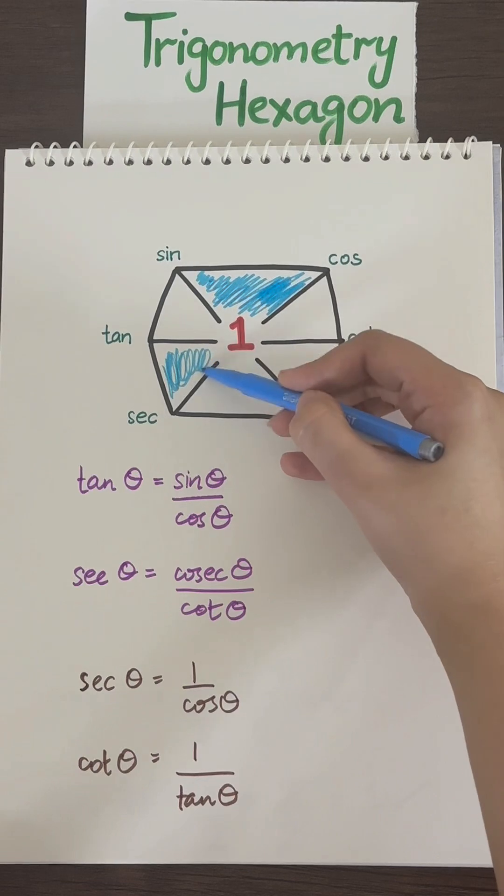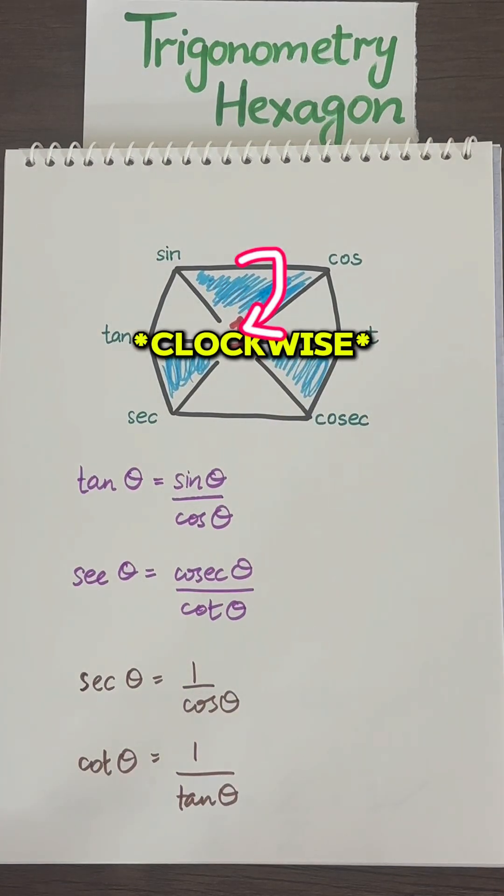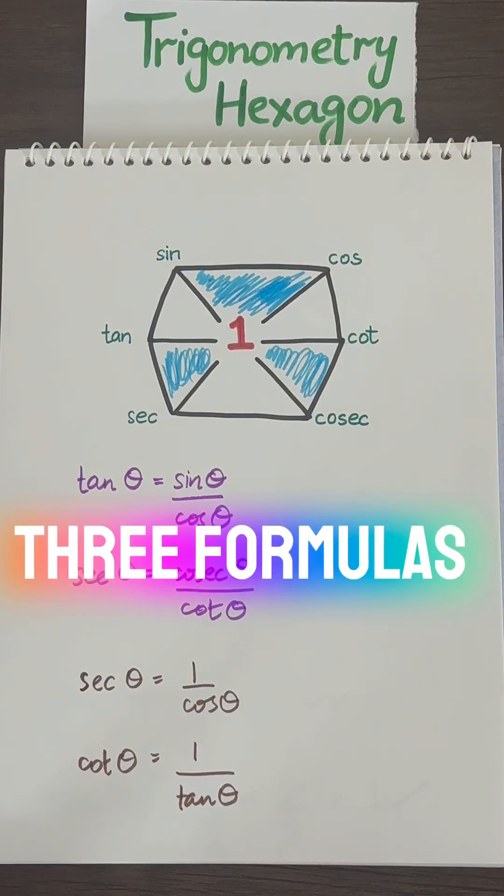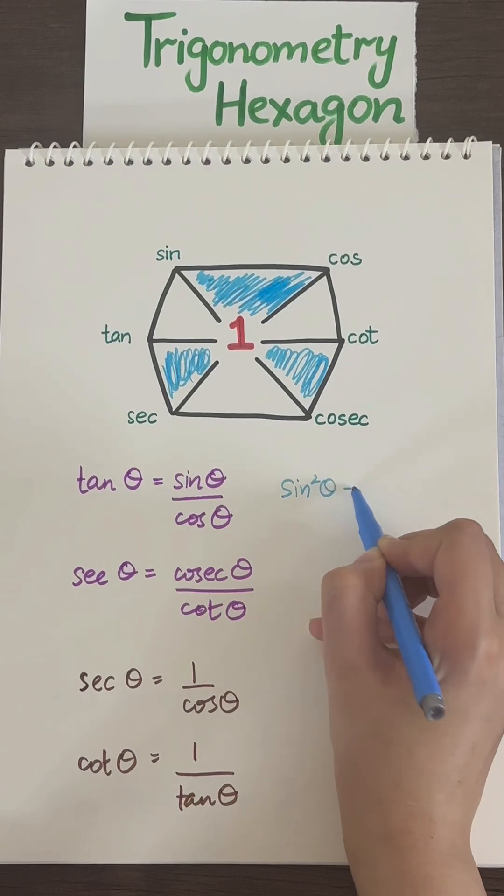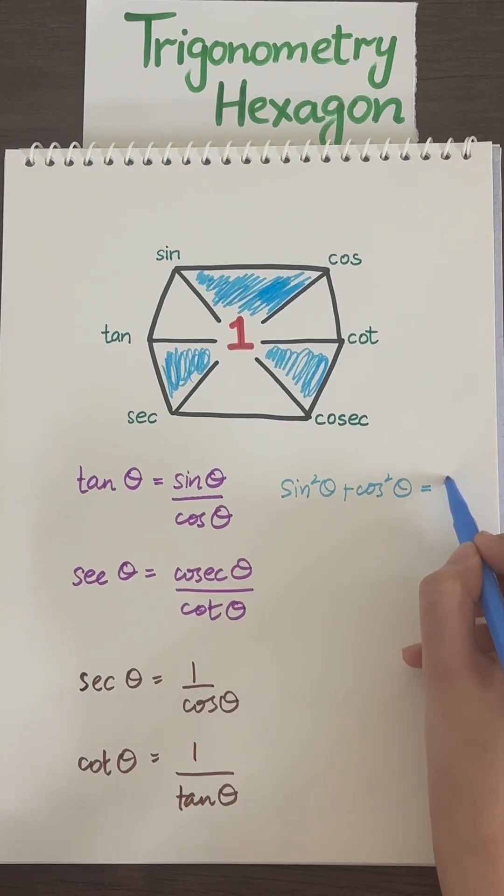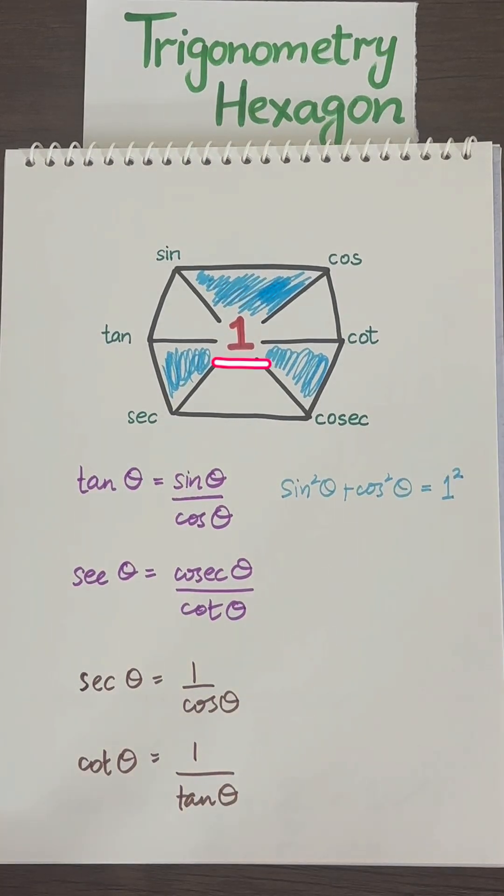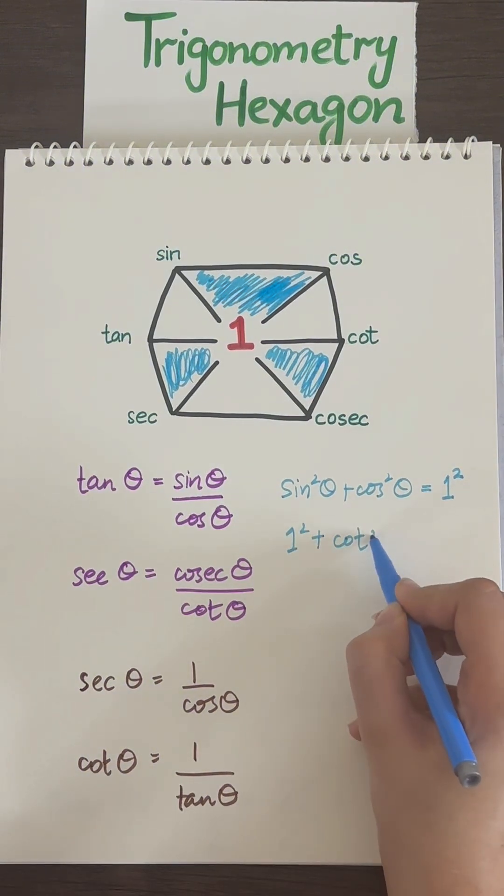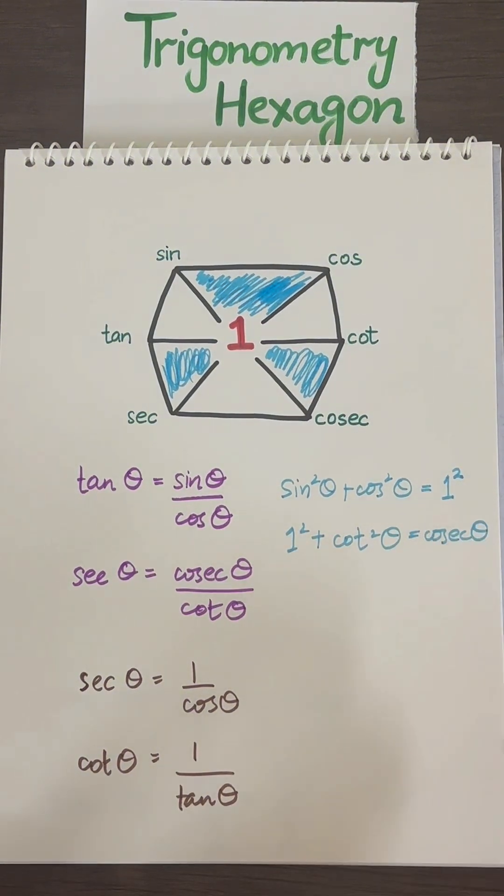Now finally, we can focus on these three triangles here. Just square everything and put an addition sign. We get three formulas. So sine squared theta plus cosine squared theta equals one squared. What about one, cotangent, and cosecant? Now we have one squared plus cotangent squared theta equals cosecant squared theta.